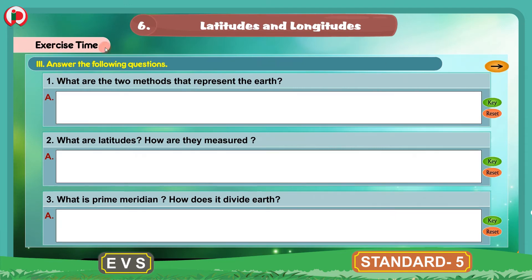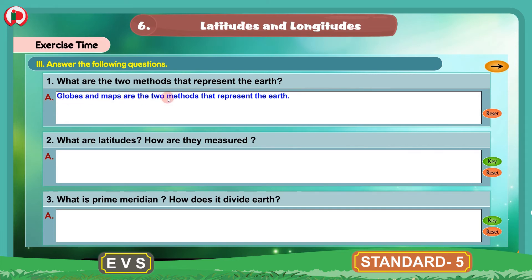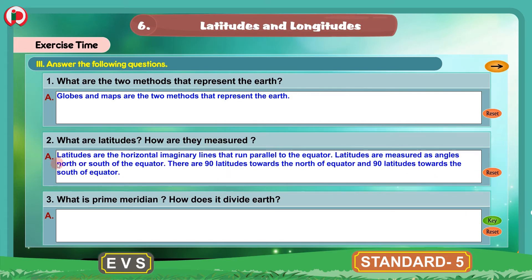The next bit is 'answer the following questions.' We have 3 questions. Question 1: What are the 2 methods that represent the earth? Globes and maps are the 2 methods that represent the earth. Question 2: What are latitudes? How are they measured? Latitudes are the horizontal imaginary lines that run parallel to the equator. Latitudes are measured as angles north or south of the equator. There are 90 latitudes towards the north of the equator.